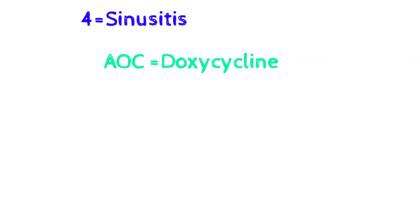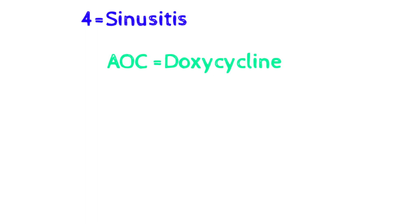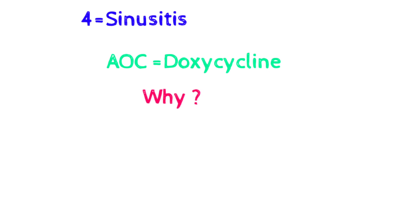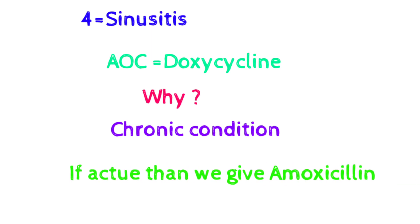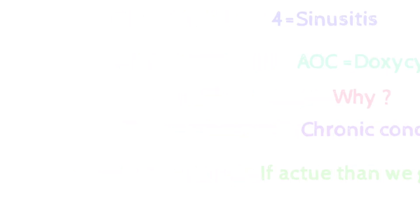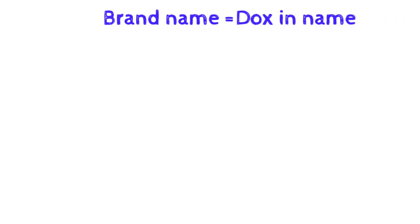The fourth condition is sinusitis. The antibiotic of choice is doxycycline. Sinusitis occurs in two conditions: chronic and acute. In chronic sinusitis we give doxycycline, while in acute sinusitis we give amoxicillin. Since sinusitis is mostly a chronic condition, we give doxycycline as the primary choice.